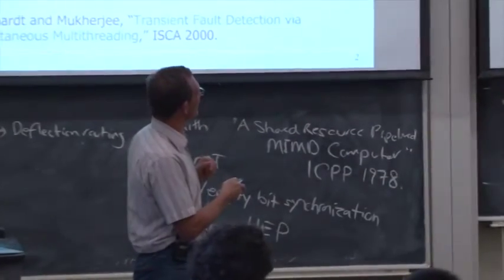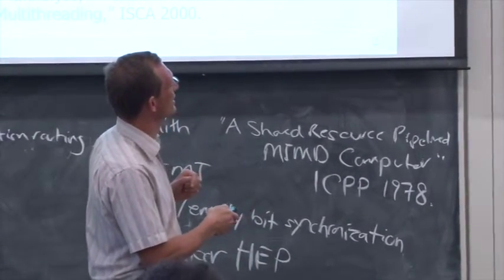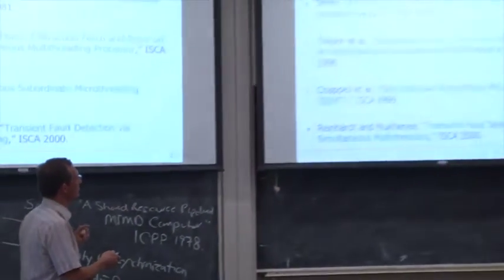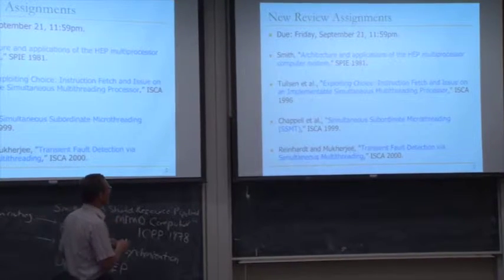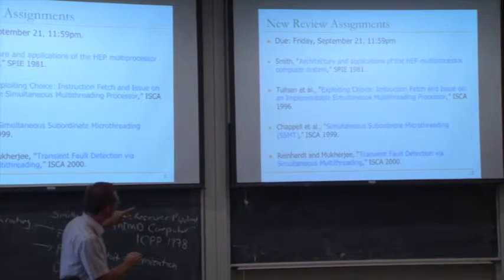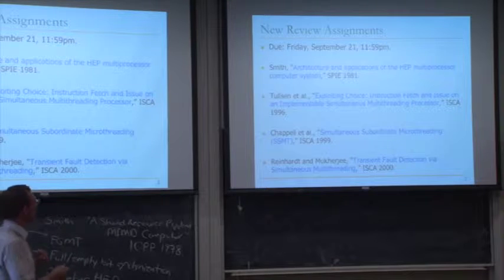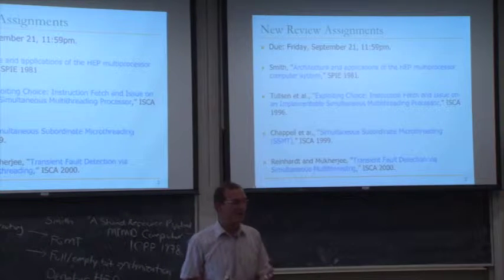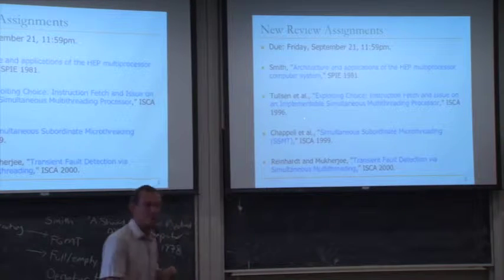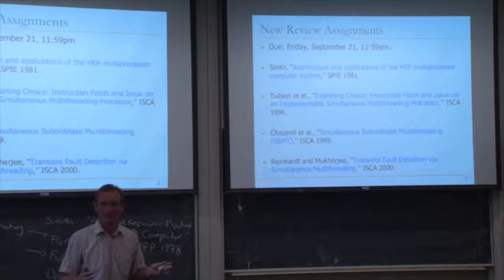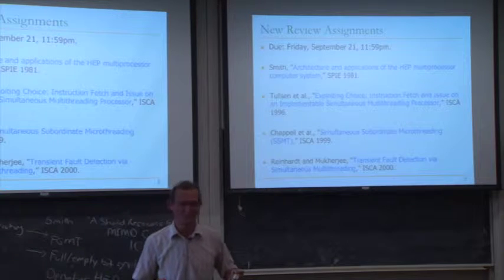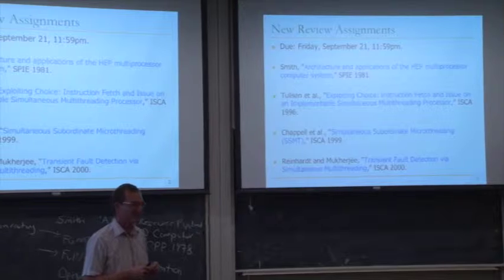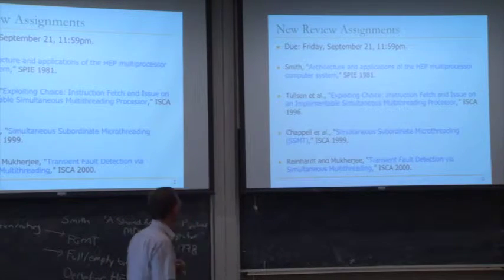The second paper is one that made simultaneous multithreading popular — not the earliest SMT paper, but one of the better ones describing how to design a relatively implementable SMT processor. The earlier paper is from ISCA 1995, with even earlier work from ISCA 1992. The ISCA 1992 paper describes something very similar to SMT but is very hard to read. The lesson: if you don't write well, you won't have impact, even if you have a great idea.